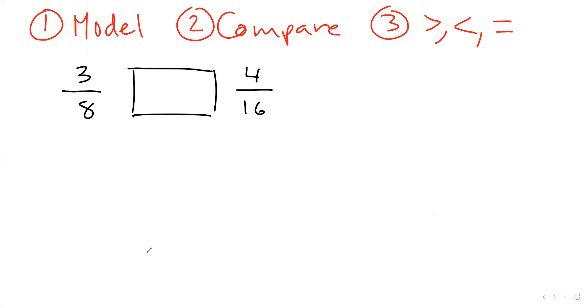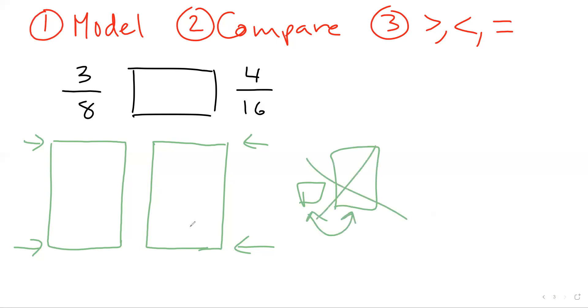So this starts to get tricky as we think about it as these numbers get larger. Like, how can we compare these with a model? So here's a step one, model. So remember, the key to this is that you're going to make two models right next to each other. And you want them to be the same size. You want them to be starting in the same place. Notice, again, they both start down here. They both end up here. You're going to do your best. You're freehanding. So it's not always going to be perfect. But it wouldn't make sense if I did this and then this. Those aren't two models that look exactly the same. That is not going to work.